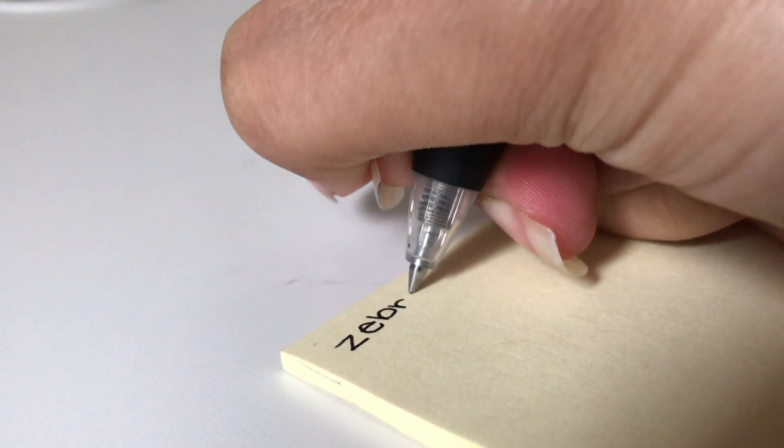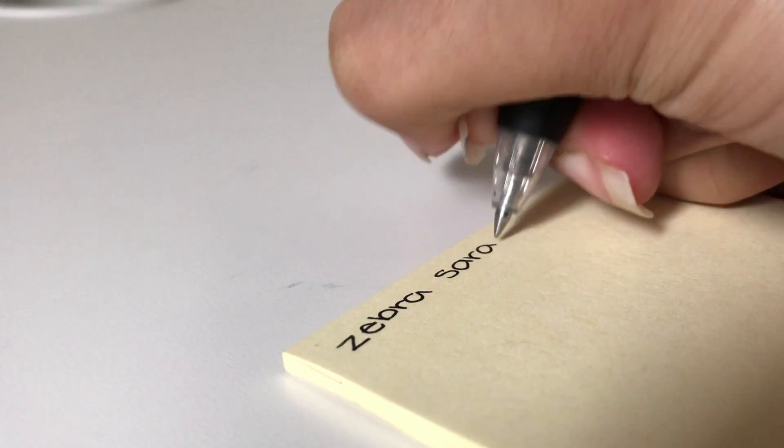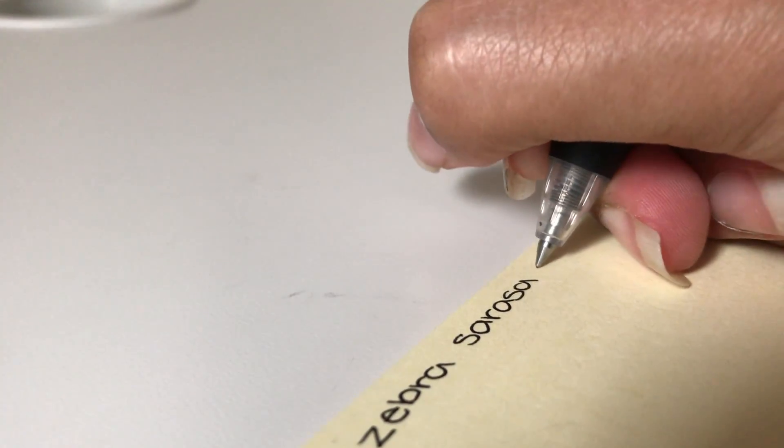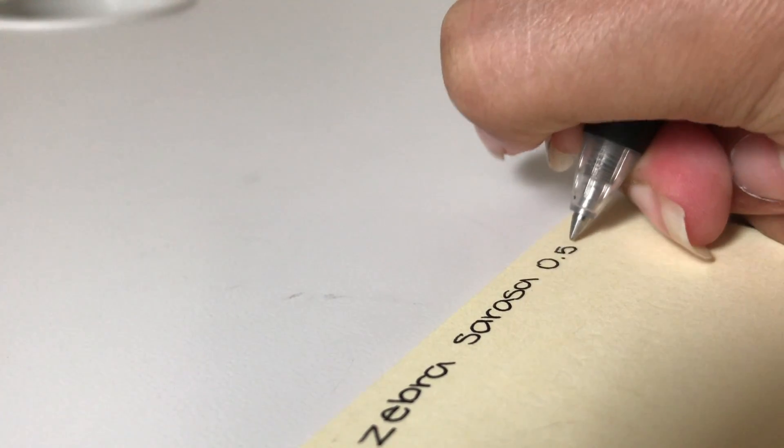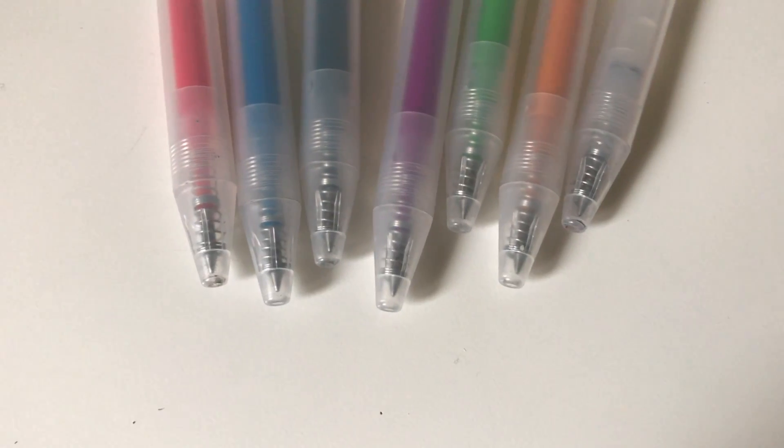My favorite pen when it comes to taking my notes is the Zebra Sarasa in 0.5 millimeters. I really like this pen brand because the ink is very smooth and I feel like it's really good when you go on top to highlight as it doesn't smudge so much. Next I use an array of different colors.